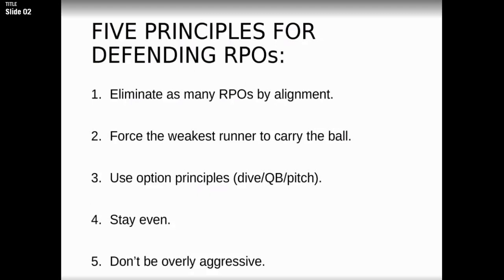Number two is to force the weakest runner to carry the ball. Most RPOs are off of a read scheme. They're going to read either a second-level defender — your linebackers — or a first-level defender, which is a defensive end or a defensive tackle. One of the RPO 101 offensive plays is just a read zone bubble. You want to pick who carries the ball. With the spread, most offenses are putting their best athlete at quarterback, and the running back has become more of a secondary ball carrier.